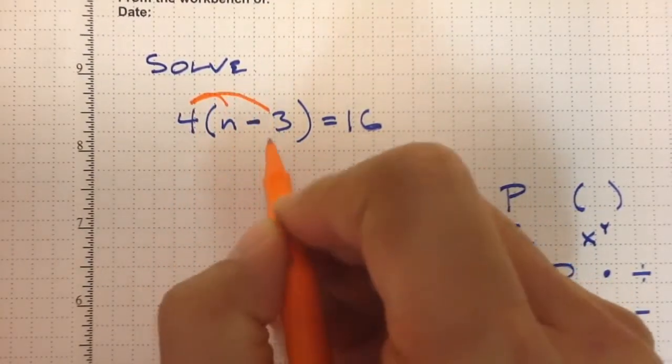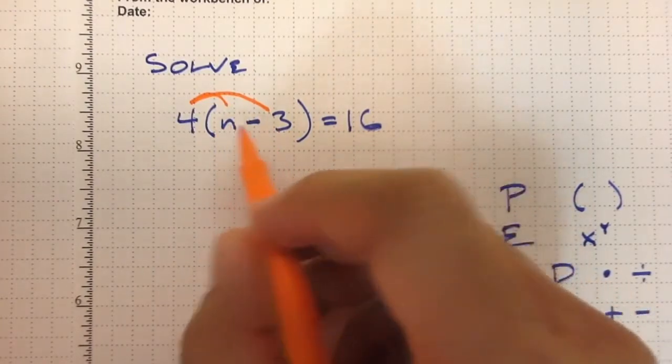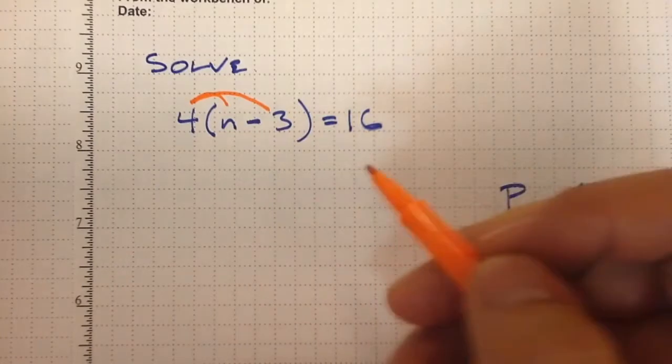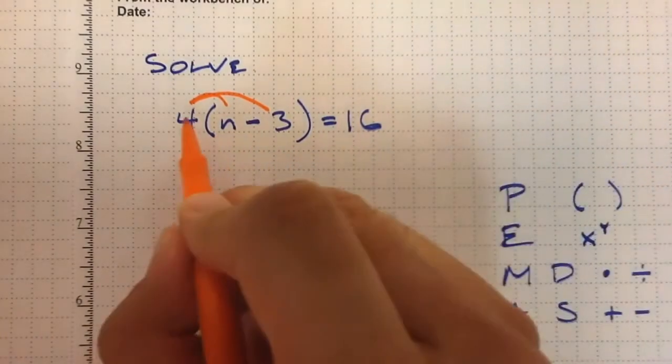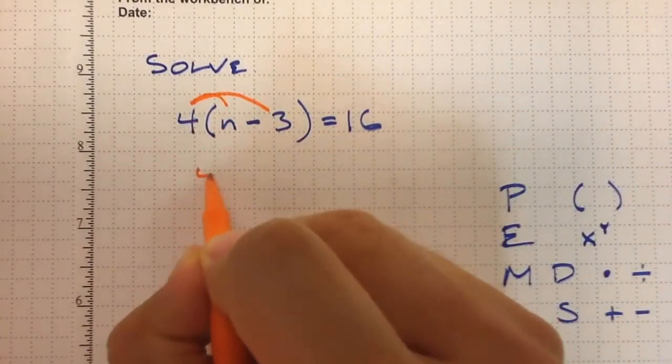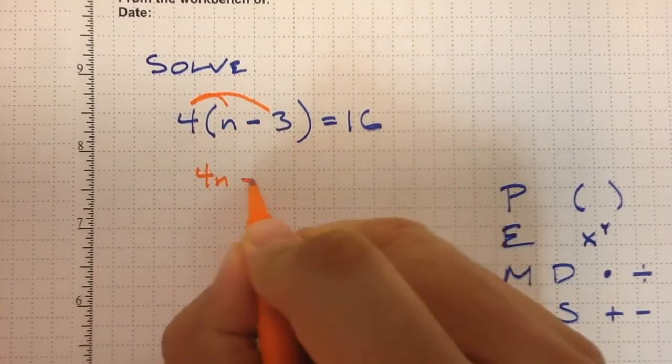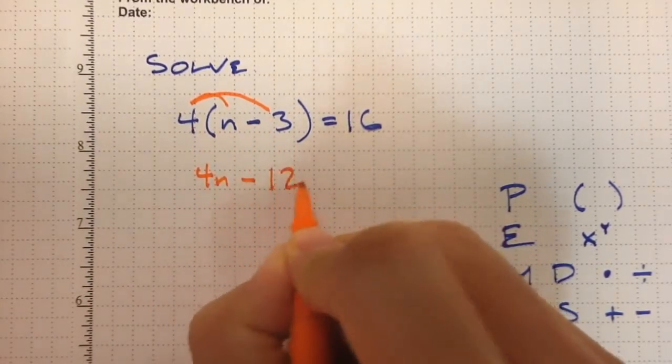One thing to keep an eye on as you're doing all your work today is make sure that what you're working with is the most simplified version of the equation before getting to any work. So here, 4 times n becomes 4n, and 4 times 3, with the minus sign just dropping down, is 12.